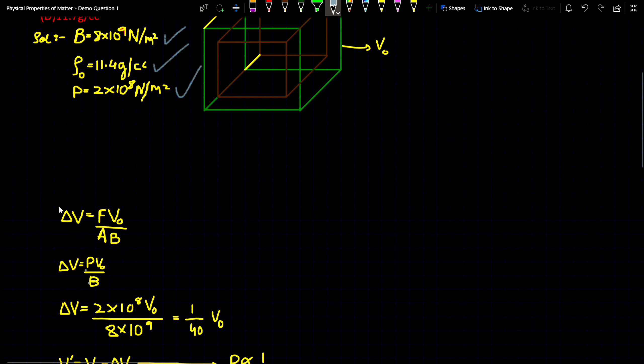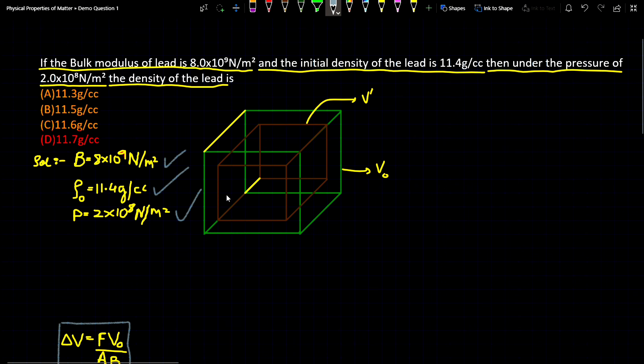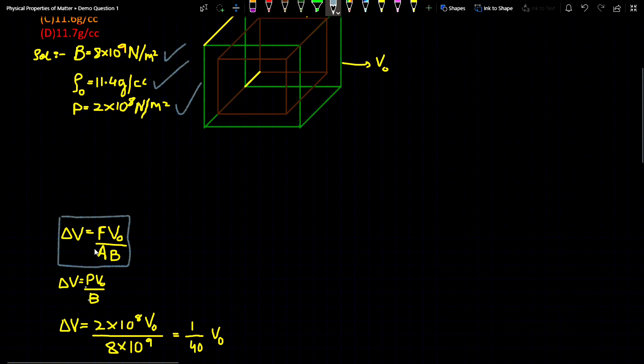We have one formula which is ΔV = F₀/V. Using this formula, we can find the final volume of this cube and also the final density. Now we don't have this F, we don't have this A. So from where to get it?